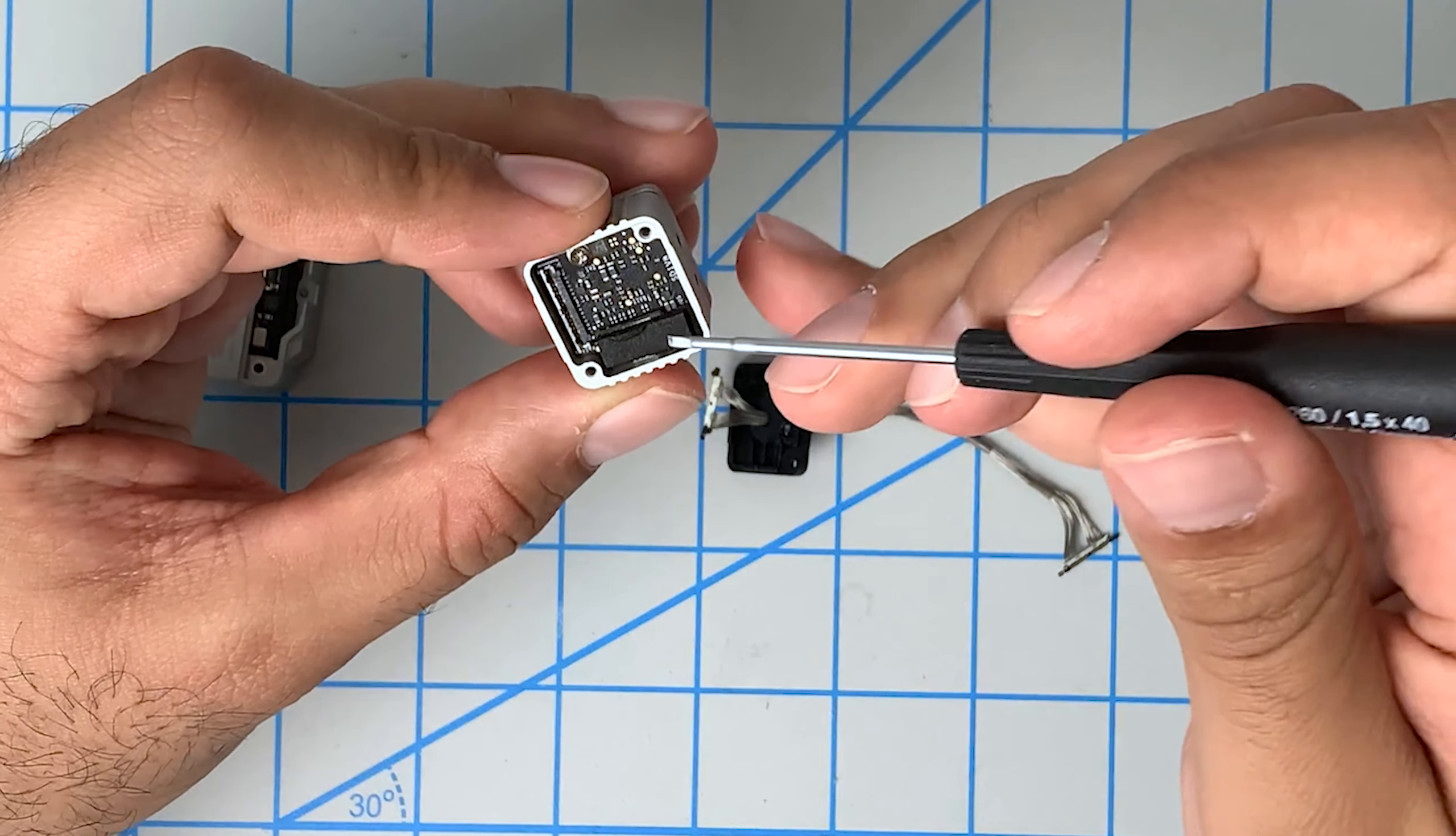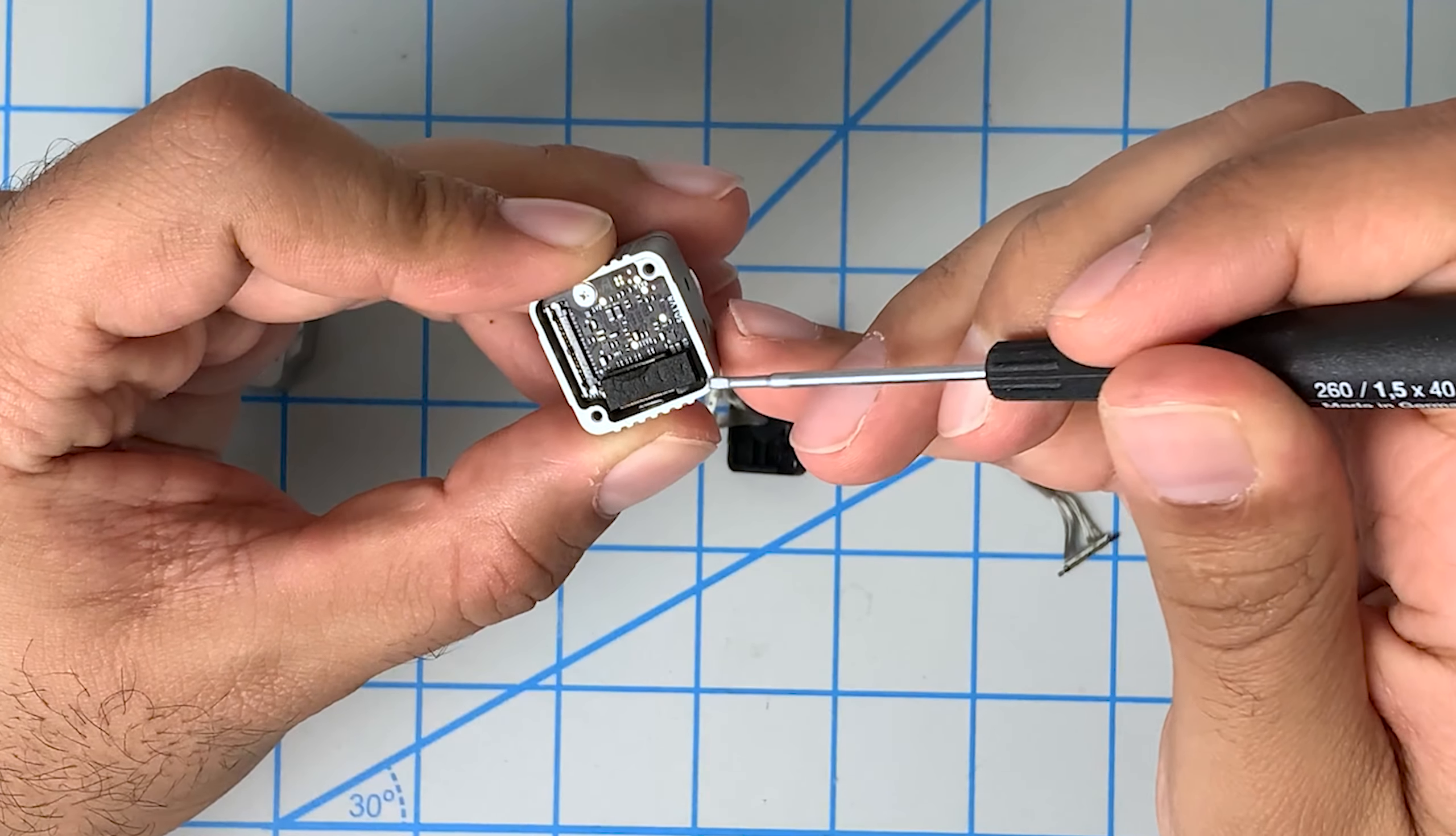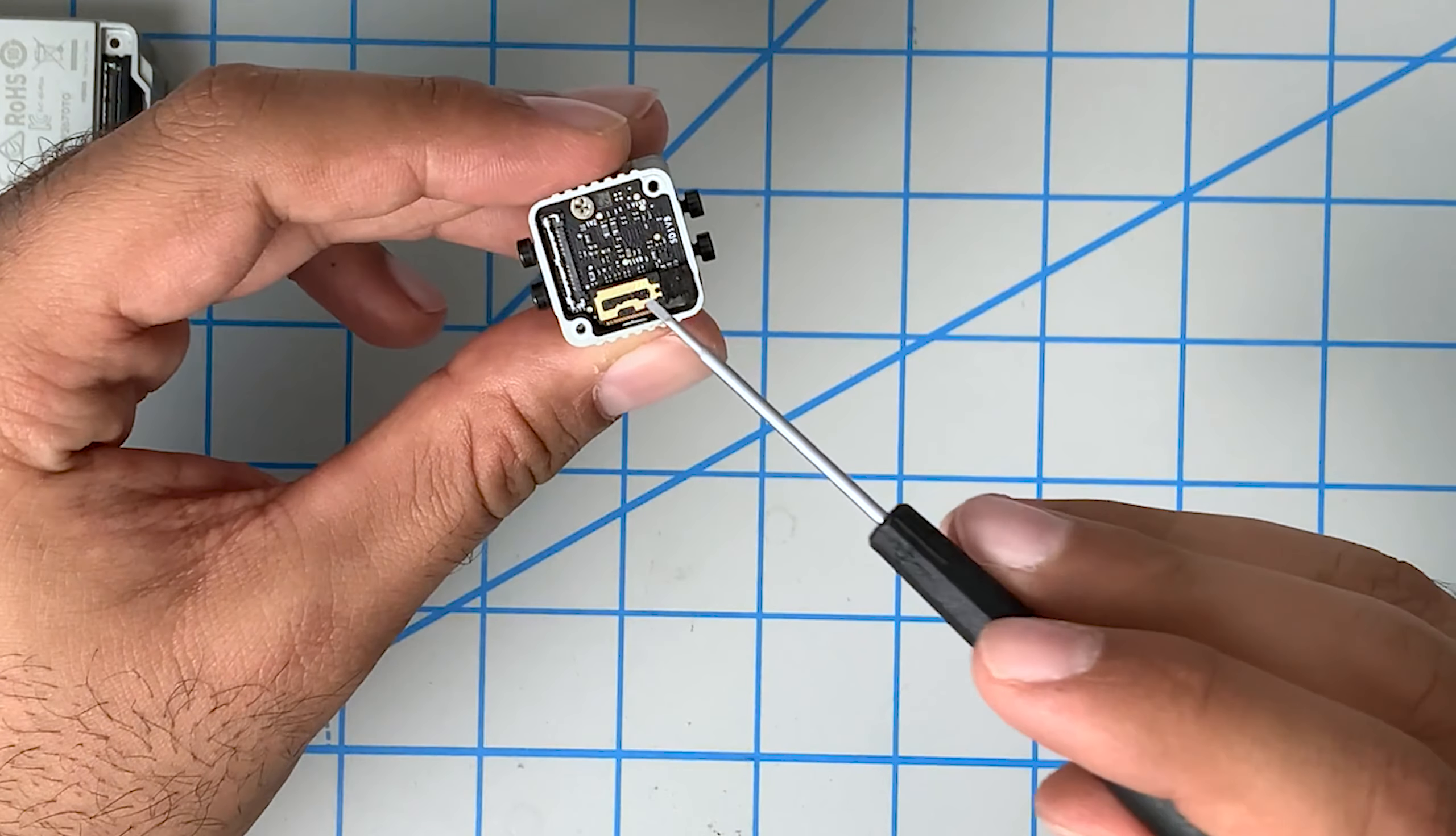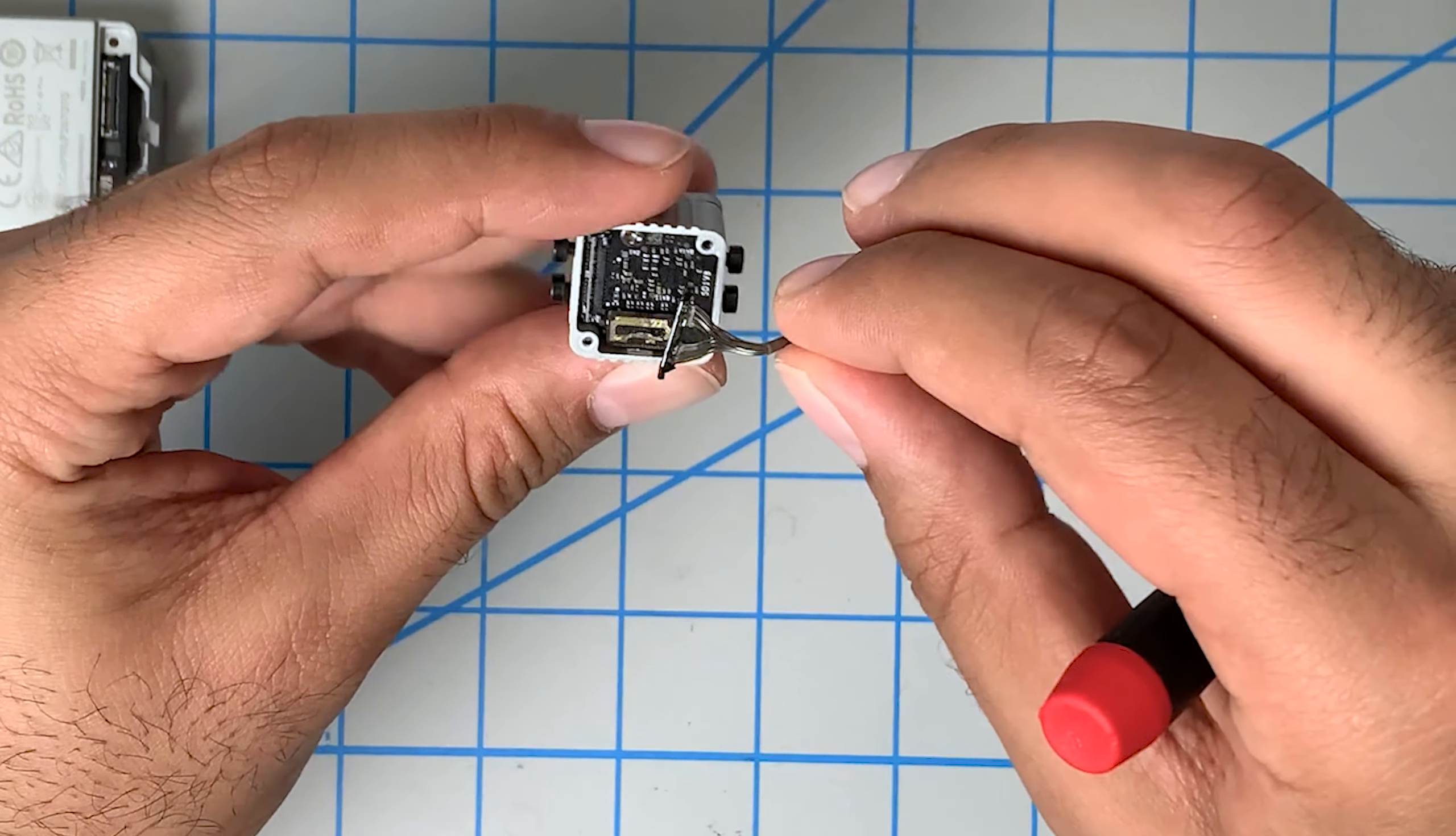So over here on this camera, we have this foam pad. So what you need to actually do is you need to remove this piece of foam. This will actually hold this piece down by itself. Now that we've removed our piece of foam from here, we're going to go ahead and install this cable.